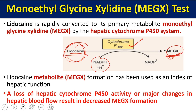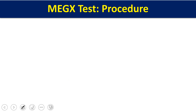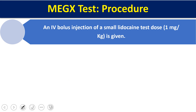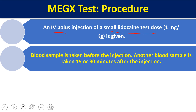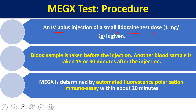Loss of hepatic cytochrome P450 activity or any major change in hepatic blood flow results in reduced MEGX formation and excretion. In this test, an IV injection of lidocaine at 1 mg per kg body weight is given. A blood sample is taken before injection (zero hour) and another 15 to 30 minutes after. MEGX is determined in serum by automated fluorescence polarization immunoassay within 20 minutes of sample collection.